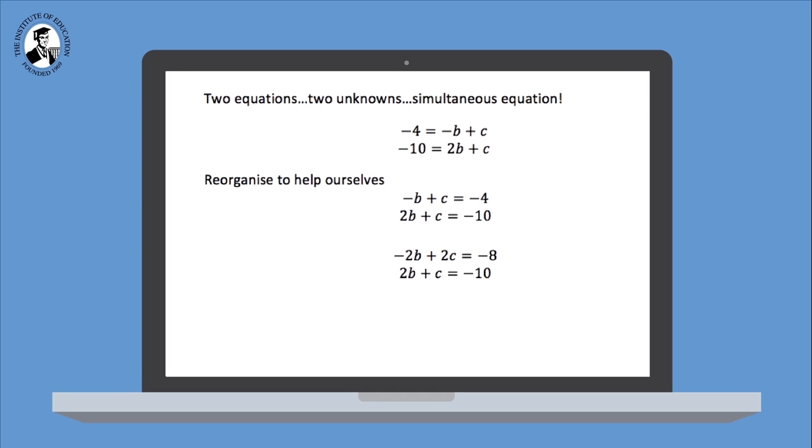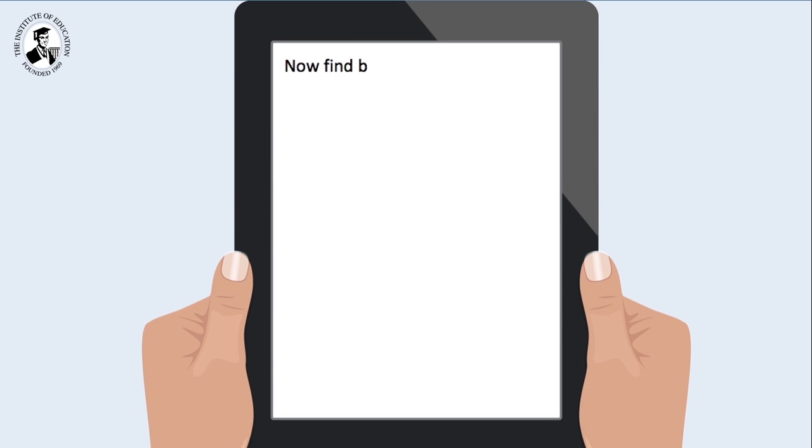Minus 2b plus 2b gives me 0b and I'll disregard that in a moment. 2c plus c gives me 3c. And minus 8 minus 10 carefully gives me minus 18. Solving that simple equation, I get c is equal to minus 6. I'm now ready to go back and find my b value.